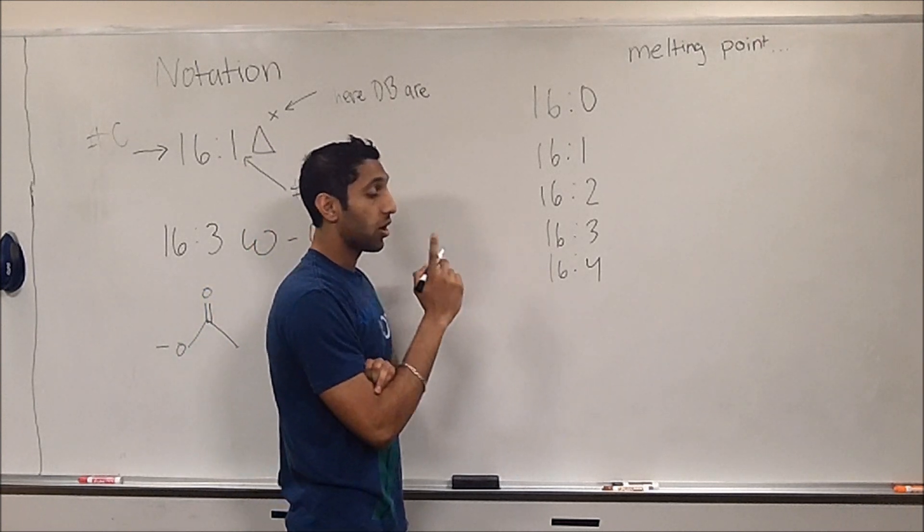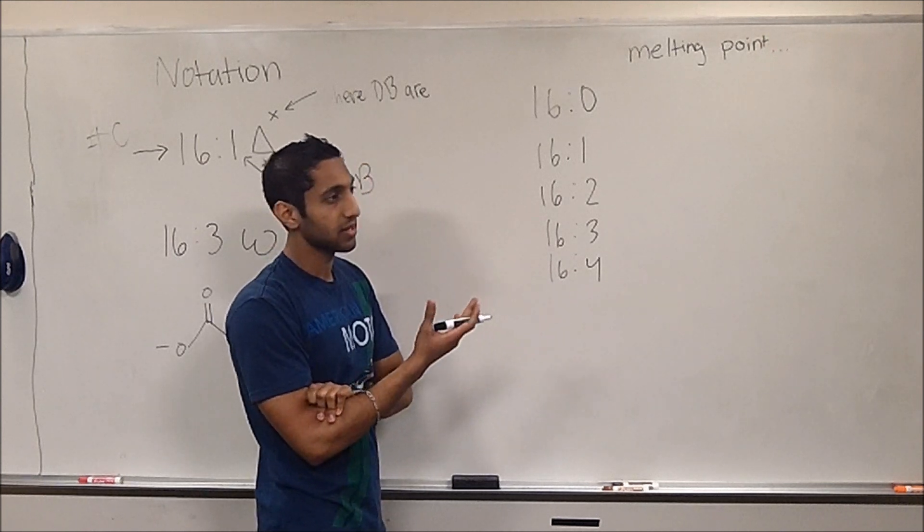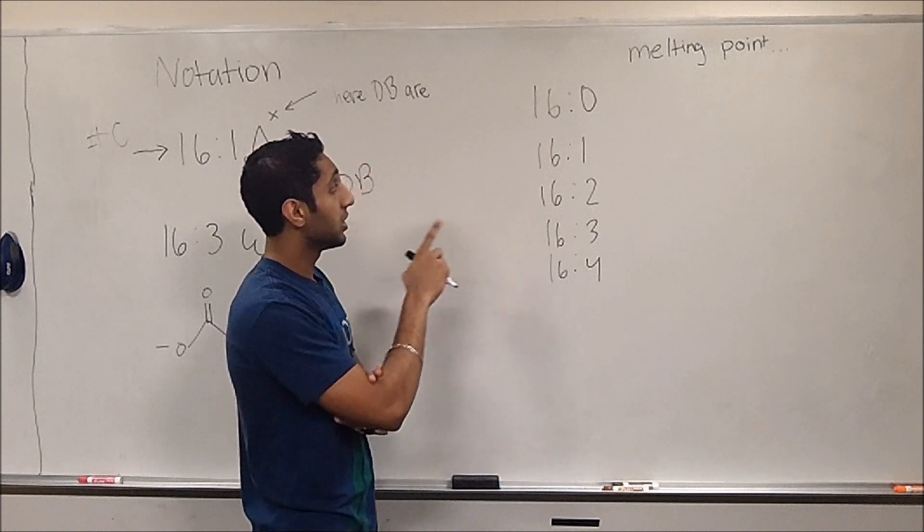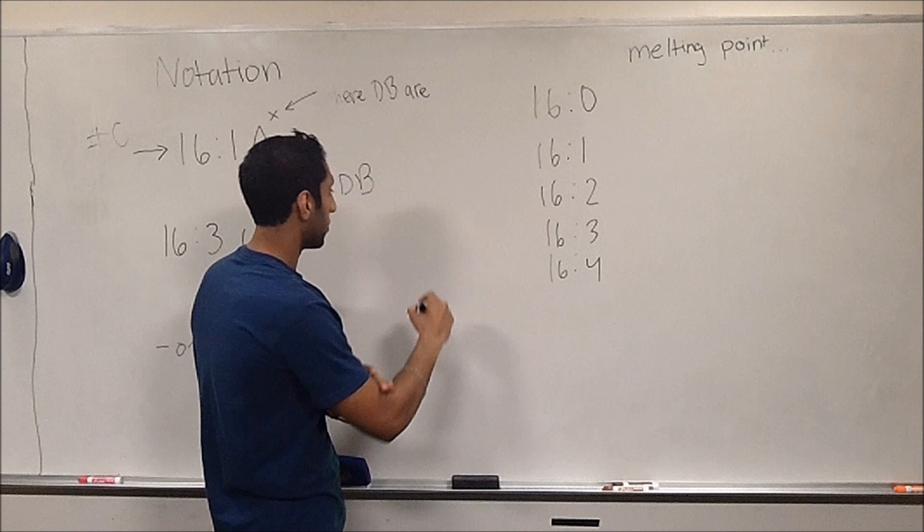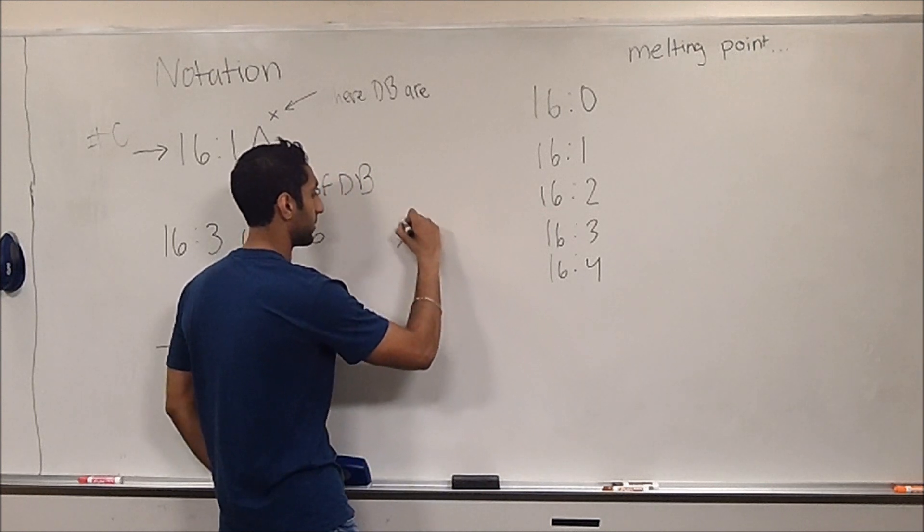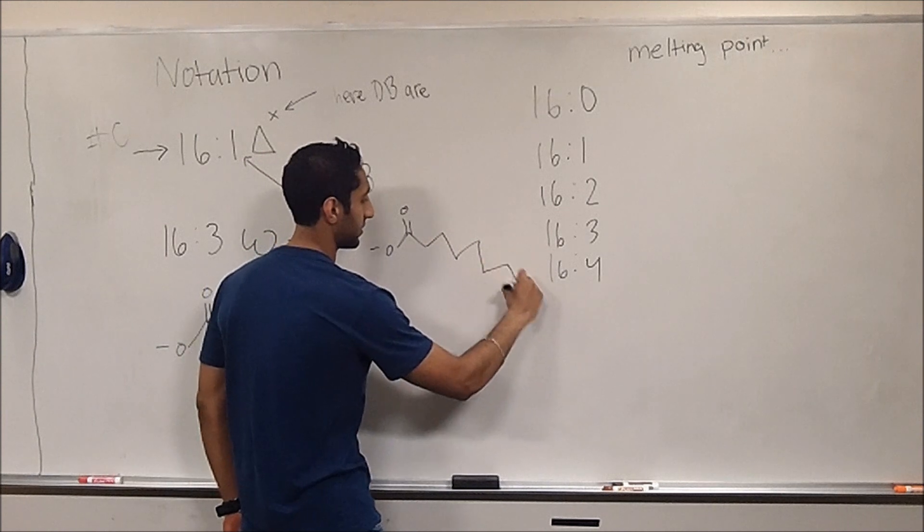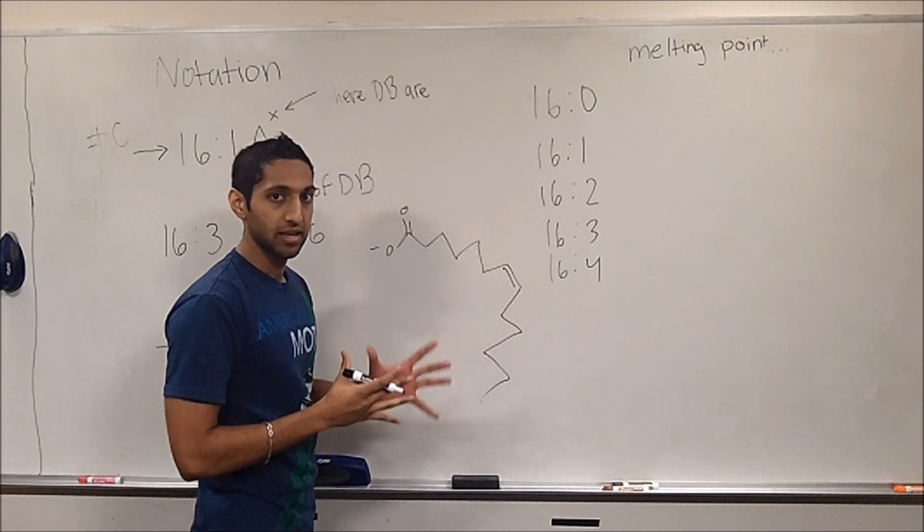We know that all double bonds, generally speaking, unless it's catalytically unsaturated, will have a cis double bond. So you'll end up having a fatty acid something similar to this, where it goes across, and then you have that, and it makes a little kink in the fatty acid.